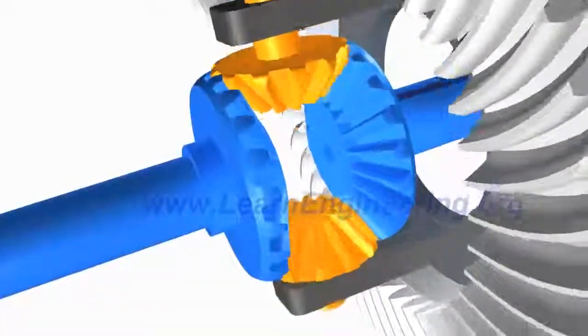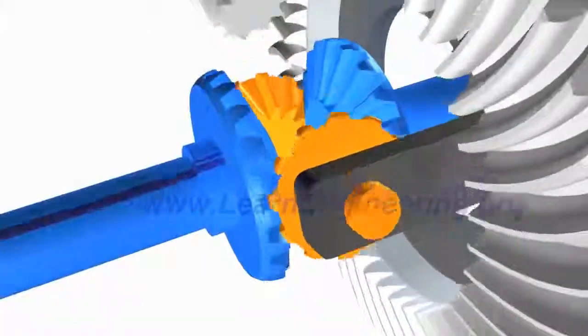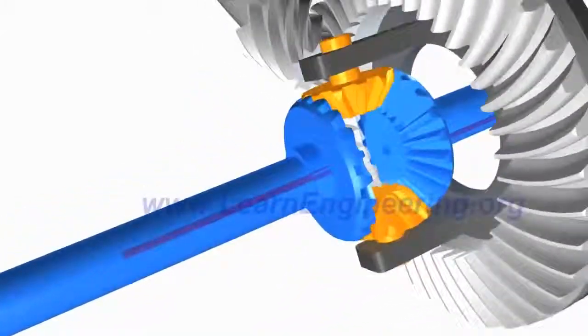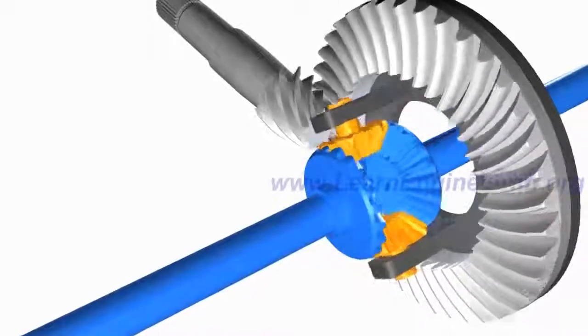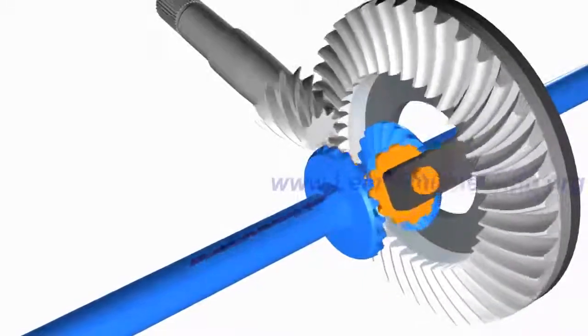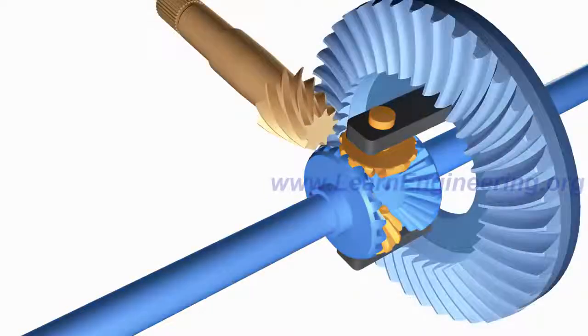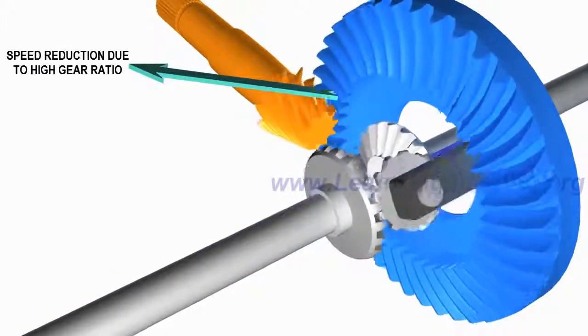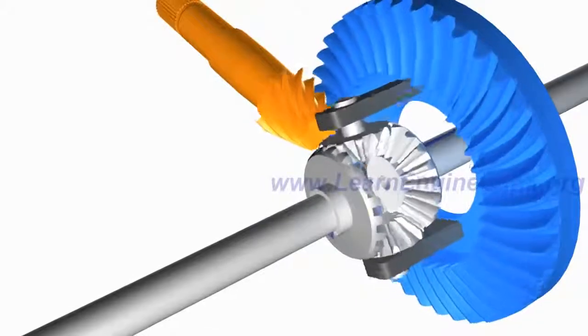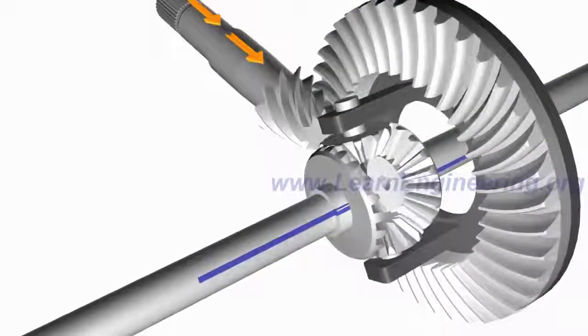Apart from allowing wheels to rotate at different RPM, differential has got two more functions. First is speed reduction at pinion ring gear assembly. This will result in torque multiplication. The other function is to turn the power flow direction by 90 degrees.